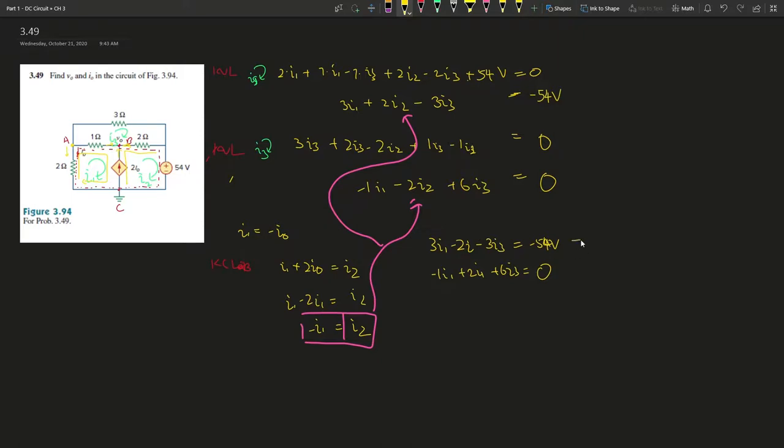If we simplify this, it's going to become I1 minus 3 I3 equals negative 54. And then this is I1 plus 6 I3 equals 0. If this equation minus this equation, I1 cancels out. Negative 3 minus 6, that's negative 9. And then negative 54 minus 0 is negative 54. Divide by 9 on both sides, and I3 is going to give you 6 amperes. Check if the ohms are kilo ohms. No, it's not. So it's amperes instead of milliamps.